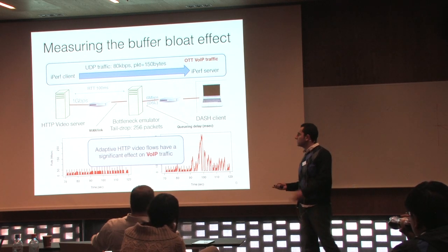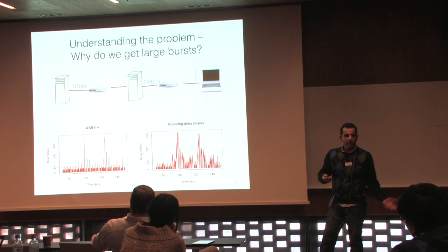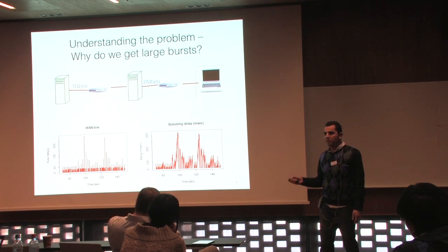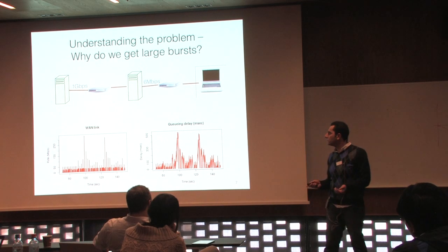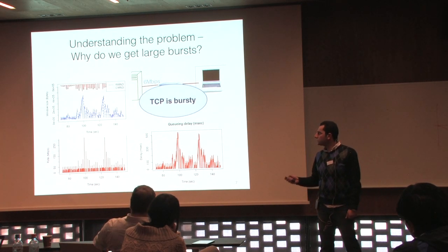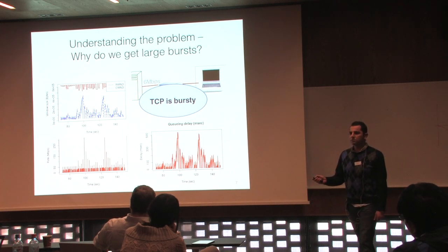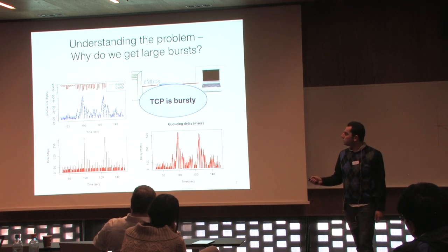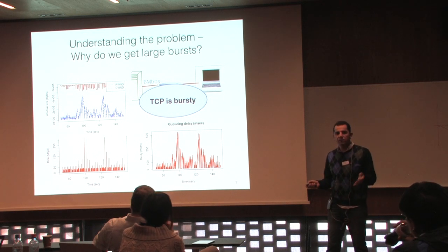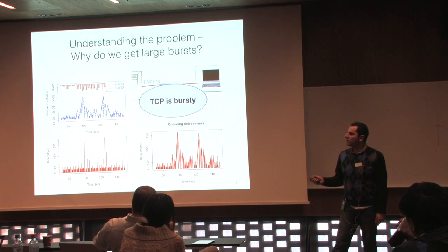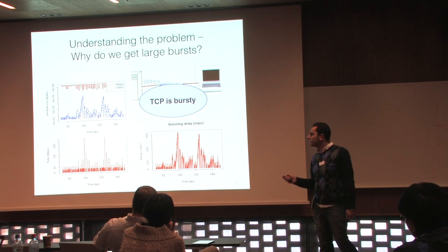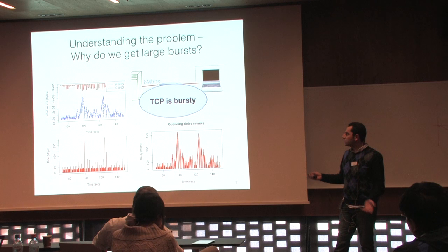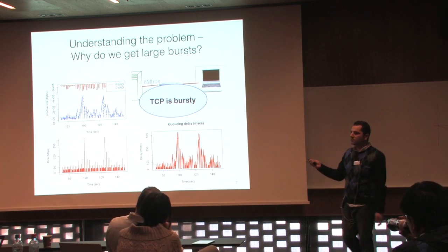To understand better why this happens, we used Wireshark to capture traffic and get values of the receiver window (RWind) and congestion window (CWin). The receiver window (red line) reaches 600 kilobytes and stays there. The blue line is an estimate of the congestion window — bytes in transit. Occasionally you get these high congestion window values, which result in these bursts and high queuing delays. TCP is bursty — we just wanted to confirm it for DASH flows.